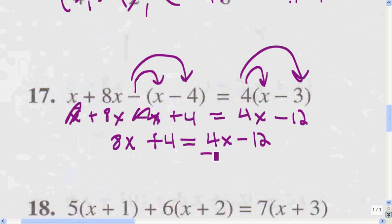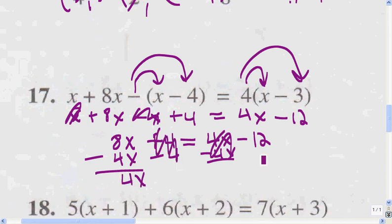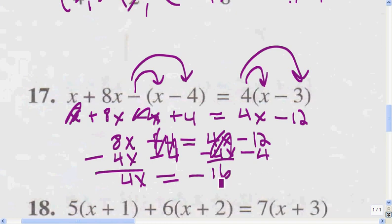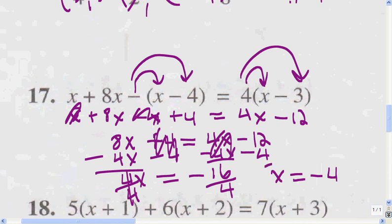I'm going to subtract 4x from both sides: that cancels out on one side and gives me 4x on the other. Then I subtract 4 from both sides, giving me 4x equals negative 16. Dividing both sides by 4, I get x equals negative 4 because a negative divided by a positive equals a negative.